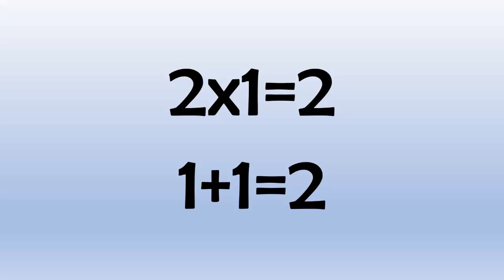2 times 10 equals 20, because 10 plus 10 equals 20. 2 times 11 equals 22, because 11 plus 11 equals 22. 2 times 12 equals 24, because 12 plus 12 equals 24.